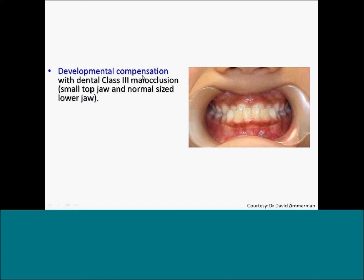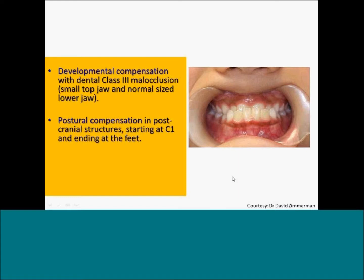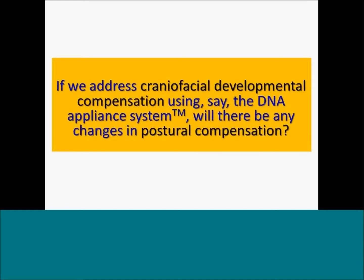Here's the same case showing the developmental compensation — this is a class 3 malocclusion, where the lower front teeth are in front of the top front teeth. We suspect the upper jaw is small and the lower jaw is probably normal in size but appears large. We'd like to work on both the dental aspects, but we also have to address the postural compensation of the post-cranial structures, starting at C1 and going all the way down to the feet. If we were to address the craniofacial developmental compensation, we could do that using a DNA appliance. The question is: will there be any changes in postural compensation?